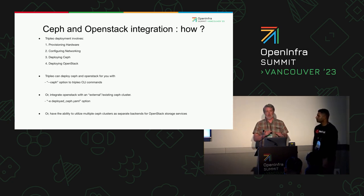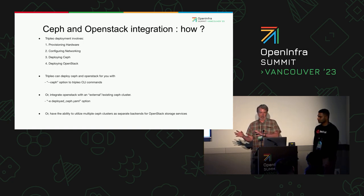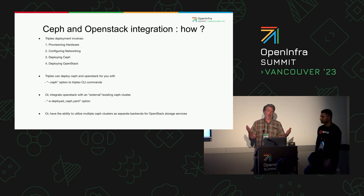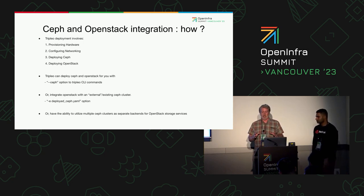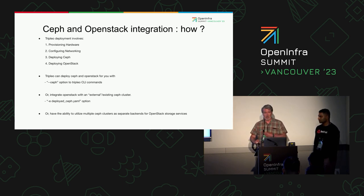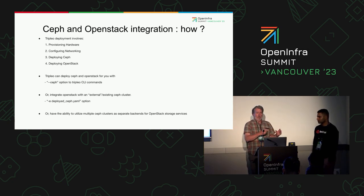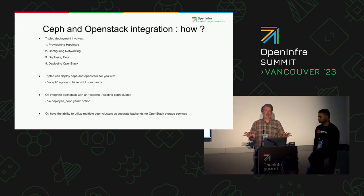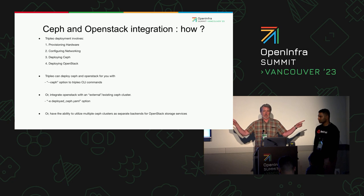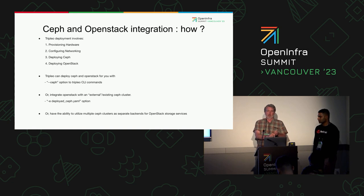TripleO is also capable of integrating with an existing Ceph cluster — in fact, it will integrate with multiple Ceph clusters if you have them. You can basically configure TripleO to do the OpenStack deployment and tell it you have a Ceph cluster over there with its FSID and Ceph keys, and another Ceph cluster elsewhere. That will configure all the clients on OpenStack so they can access these external clusters. The key thing is that TripleO can actually do your Ceph deployment for you, but can also consume or grant access to an existing Ceph cluster.